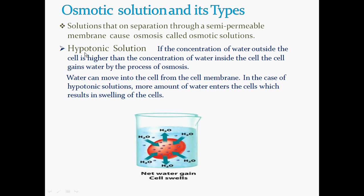Let's understand what the hypotonic solution actually is. If the concentration of water outside the cell is higher than the concentration of water inside the cell — that means the amount of water outside the cell is greater compared to inside — the cell gains water by the process of osmosis. We know that water moves from higher concentration to lower concentration in osmosis. Such a solution is named a hypotonic solution.